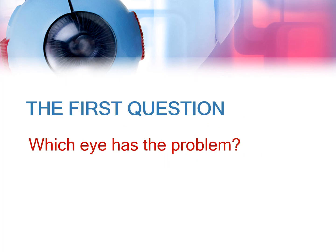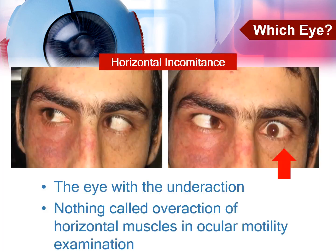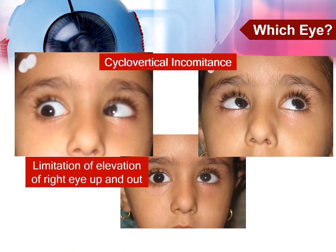The first question — which eye has a problem — is straightforward in horizontal incomitance. The eye with the under action is the eye with the problem. This is simply because there is nothing called an over action of horizontal muscles in ocular motility examination. In cyclo-vertical muscle incomitance, however, the answer is not always that easy.